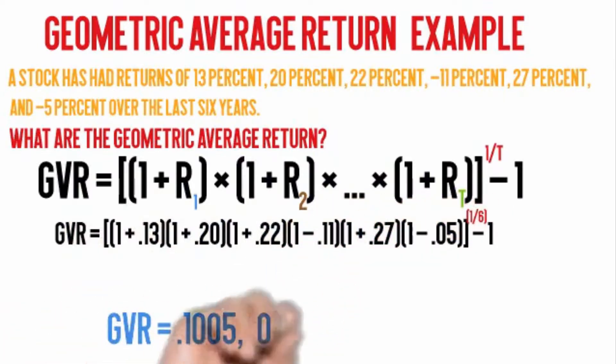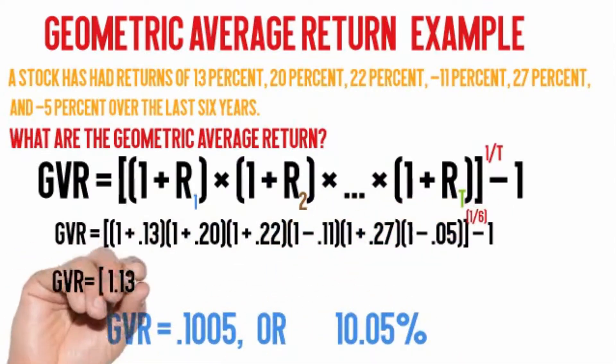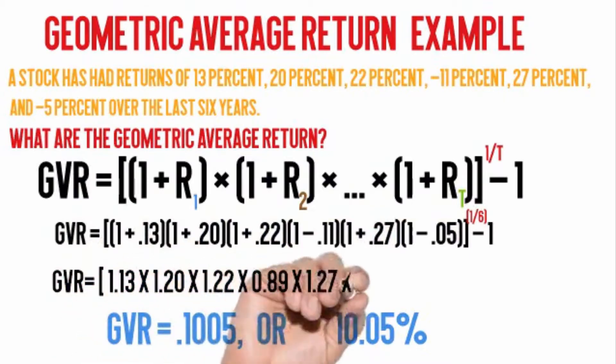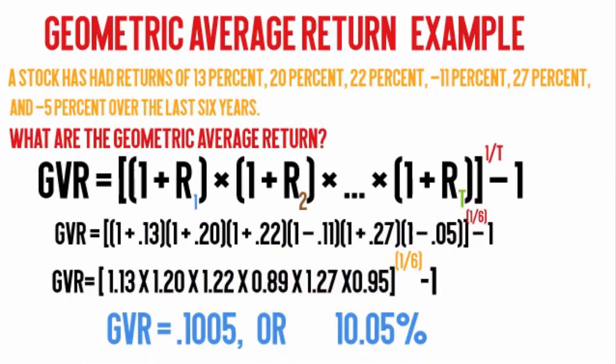Step 2: multiply all the numbers from 1.13, 1.20, 1.22, 0.89, 1.27, and 0.95 together.